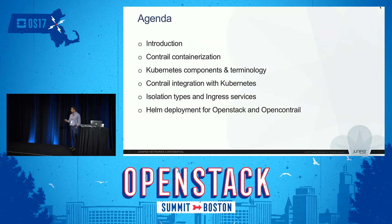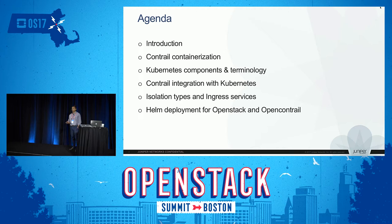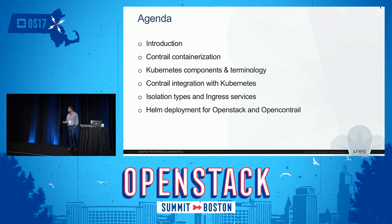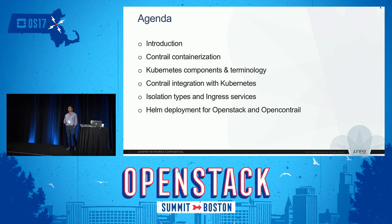Let me give you a quick overview about Contrail. We are an SDN solution for OpenStack, and currently we are also working on new container technologies such as Mesos, OpenShift, and Kubernetes, providing an SDN solution for these containerization technologies. I'll talk about mapping Contrail resources to Kubernetes, and also the new Helm deployment that Contrail has used for both OpenStack and OpenContrail.